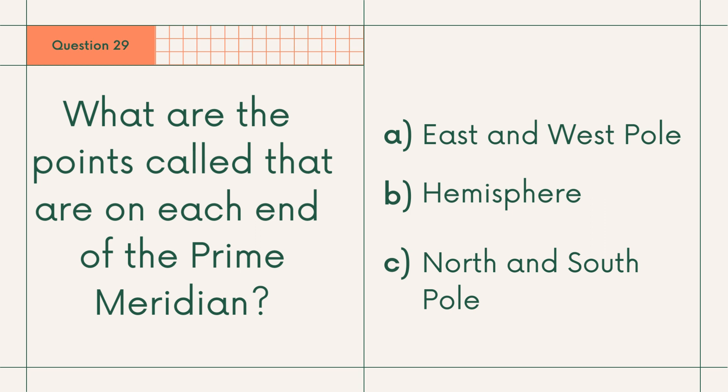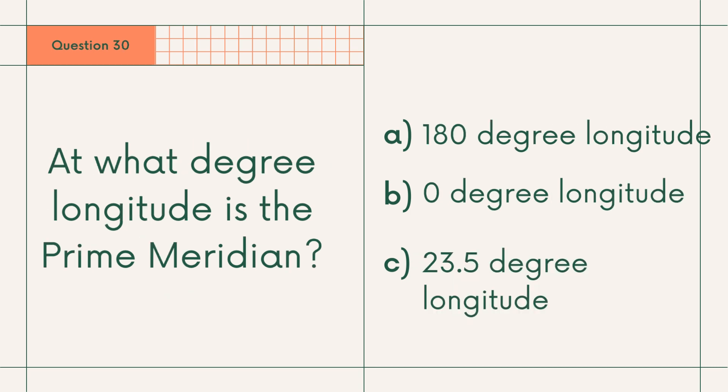Question 29: What are the points called that are on each end of the prime meridian? A. East and west pole, B. Hemisphere, or C. North and south pole. Answer: C. North and south pole.